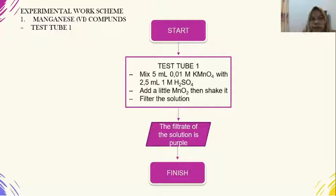Experimental work scheme: Manganese(VI) compounds, Test 1. Mix 5 ml of 0.01 molar KMnO4 with 2.5 ml of 2 molar H2SO4. Add a little MnO2, then shake it. Filter the solution. The result is the filtrate of this solution is purple.